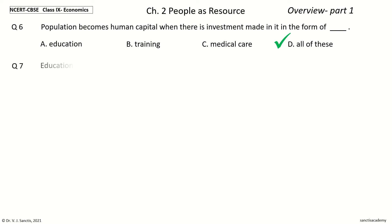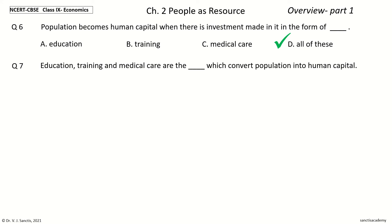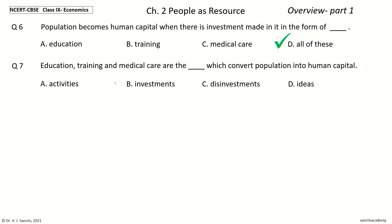Question 7: Education, Training, and Medical Care are the ___ which convert Population into Human Capital. The options are: Activities, Investments, Disinvestments, Ideas. Your time to choose. And the answer is: Investments. So, Education, Training, and Medical Care are the Investments which convert Population into Human Capital.